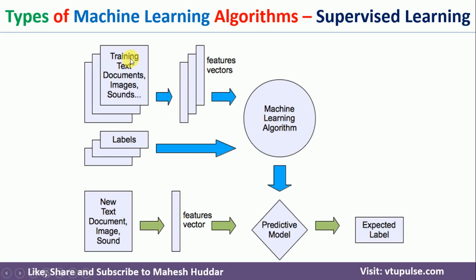Initially we have some set of data, which is divided into two parts: training data and testing data. The training data may be documents, images, or sounds depending on the kind of problem you are solving. Along with this data, we give labels to the machine learning algorithm. The algorithm takes both the input and the labels, learns from that data, and produces a predictive model.